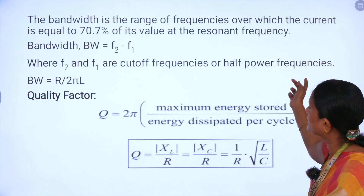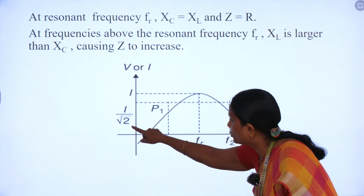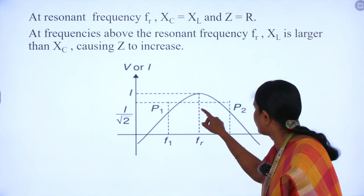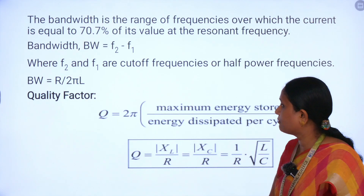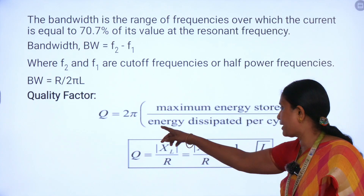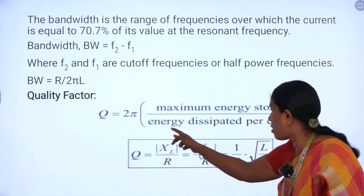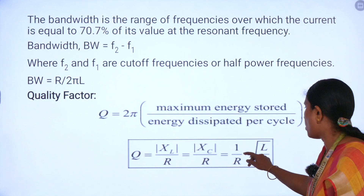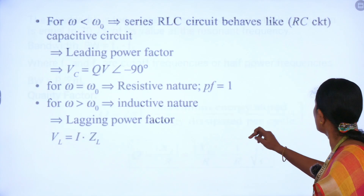We calculate bandwidth when the current is equal to 70.7% of the maximum value — that means 1/√2 is taken as 70.7%. From this, we calculate F1 and F2. One more formula: bandwidth equals R/(2πL). And then the quality factor formula is 2π × (maximum energy stored) / (energy dissipated per cycle). We can use XL/R, or XC/R, or (1/R)√(L/C) — these three formulas to find out the quality factor.